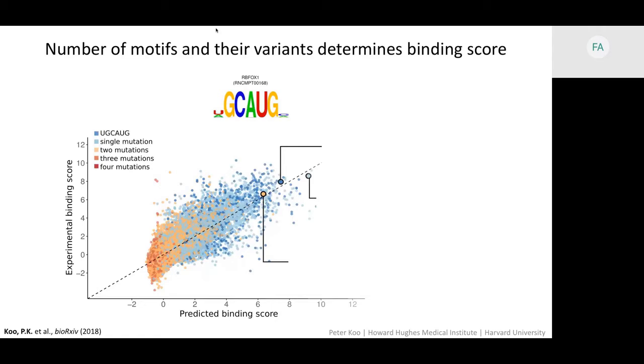Here is the scatter plot of the experimental binding scores versus the predicted binding scores. Each data point is a different test sequence, and it's colored by the number of mismatches of the best-matching sub-sequence to the canonical motif. I want to guide your eyes to these three data points that have high binding scores because they all have high binding scores, yet each of these sequences has a different number of mismatches to the canonical motif.